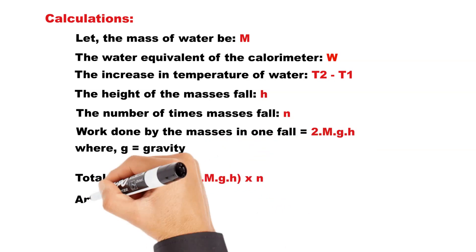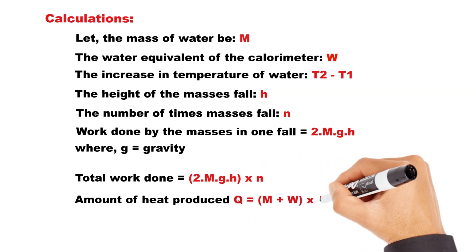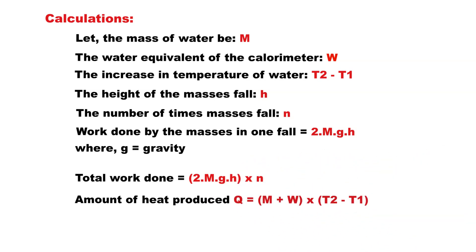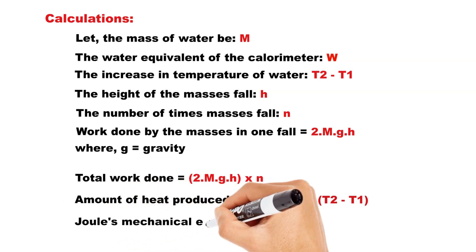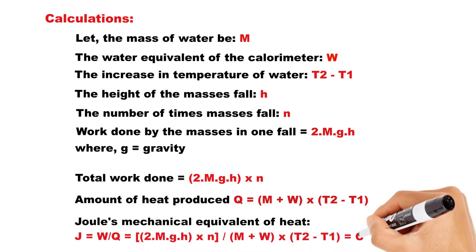The amount of heat produced Q is equal to (M plus W) multiplied by (T2 minus T1). Finally, Joule's mechanical equivalent of heat J is equal to W divided by Q, which is equal to a constant.